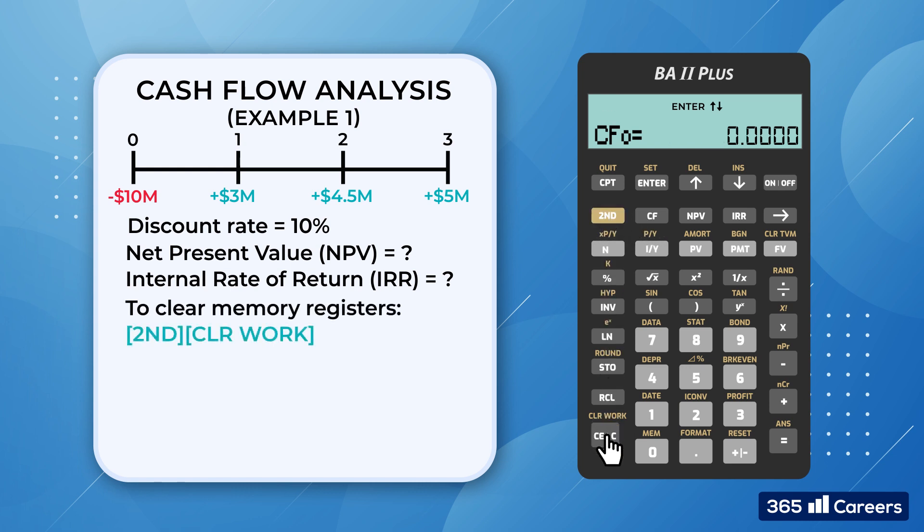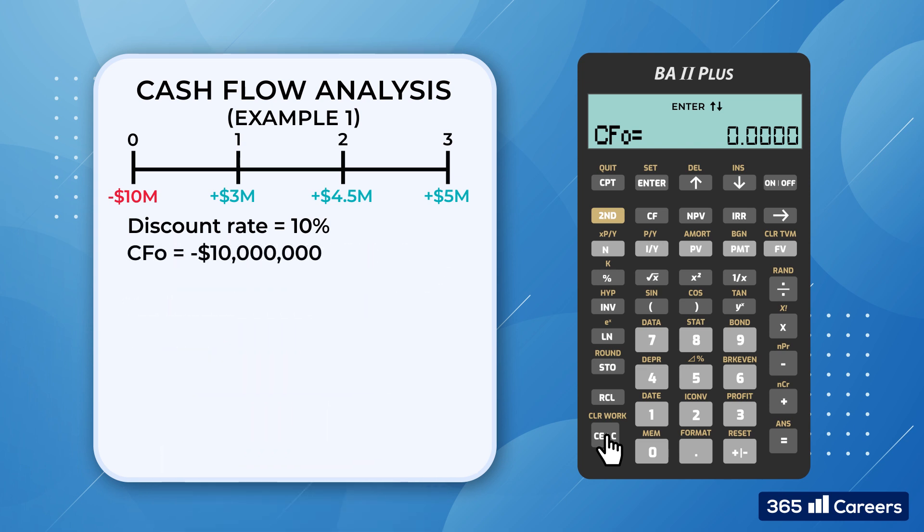Now we can input the cash flows. As noted earlier, we will follow the principle that cash inflows are entered as positive, while cash outflows are negative. Since the project requires an investment of $10 million, we type 10 million, followed by the plus-minus key to change its sign. Then we hit enter. We've just stored the first value.